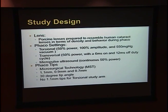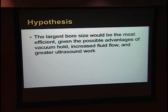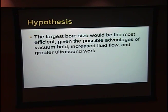Unfortunately, there was no 1.1 mm tip for the torsional study arm, so we only compared the 0.7 to the 0.9 in that arm. In reviewing the literature, it became evident that three main components were important to the efficiency of cataract extraction: aspiration flow rate, vacuum levels, and FACO tip movement.